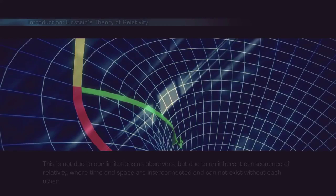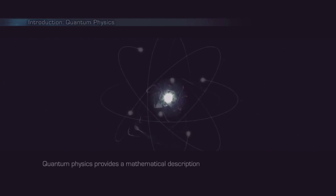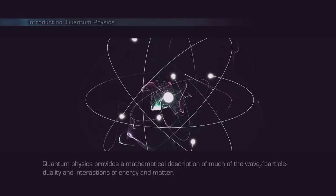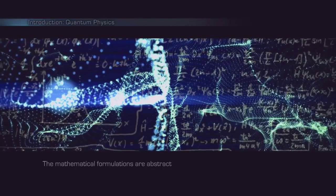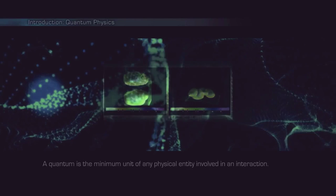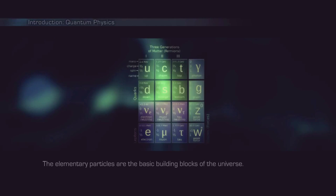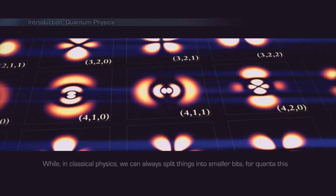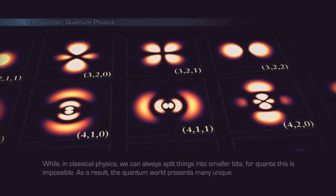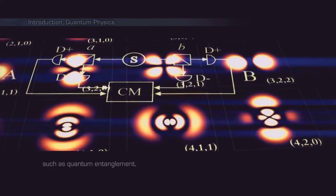Quantum physics provides a mathematical description of much of the wave particle duality and interactions of energy and matter. It departs from classical physics primarily at the atomic and subatomic scales. The mathematical formulations are abstract and the implications are often non-intuitive. A quantum is the minimum unit of any physical entity involved in an interaction. The elementary particles are the basic building blocks of the universe. They are the particles which all other particles are made of. While in classical physics we can always split things into smaller bits, for quanta this is impossible. As a result, the quantum world presents many unique phenomena that cannot be explained through classical laws, such as quantum entanglement, the photoelectric effect, Compton scattering and many more.